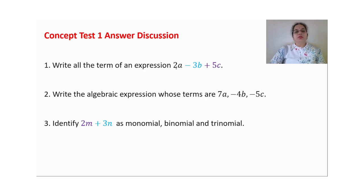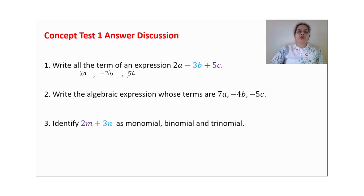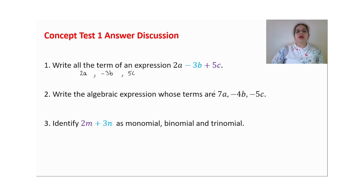The expression has three terms. A term is always with its sign. The first term is 2a, then minus 3b — the term carries its sign — and the third term is 5c (no sign means positive). So the three terms are 2a, minus 3b, and 5c.